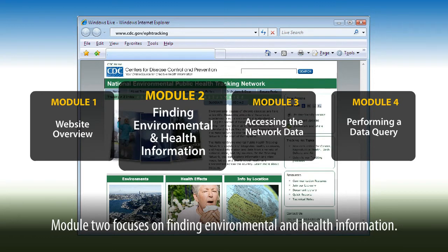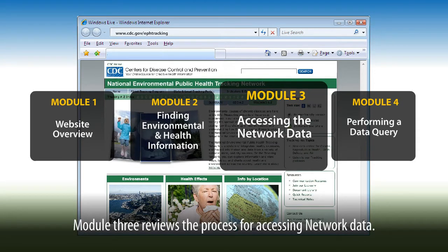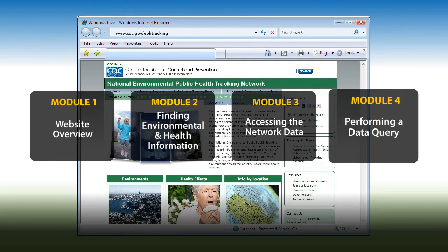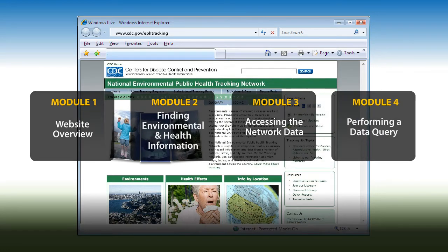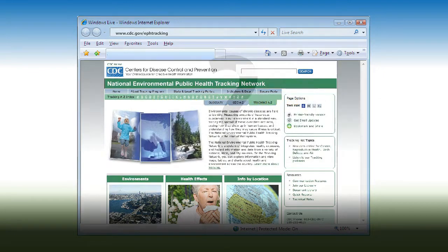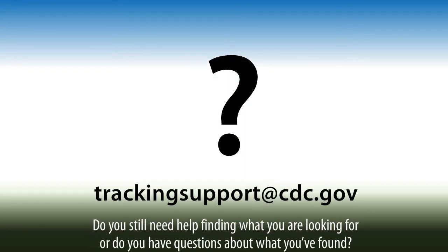Module 2 focuses on finding environmental and health information, Module 3 reviews the process for accessing network data, and Module 4 further explains the query and results page. Do you still need help finding what you are looking for, or do you have questions about what you've found?